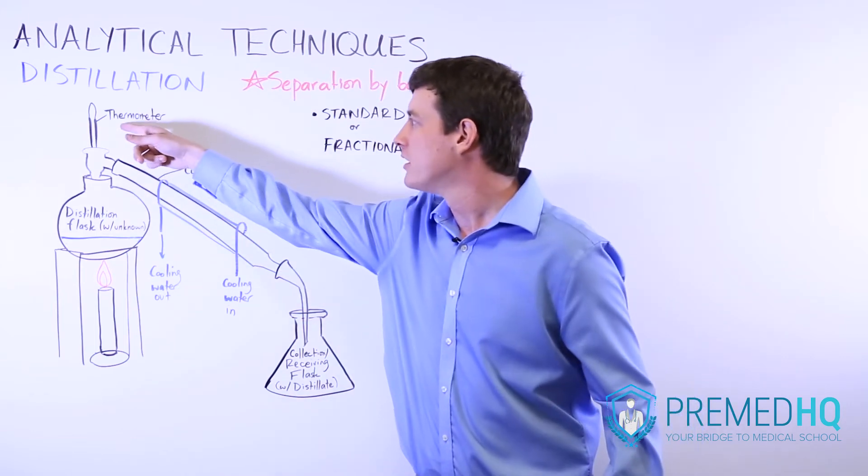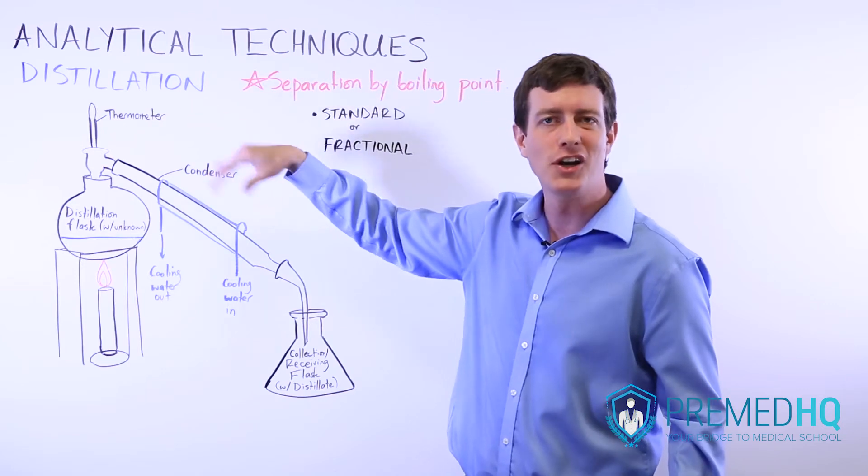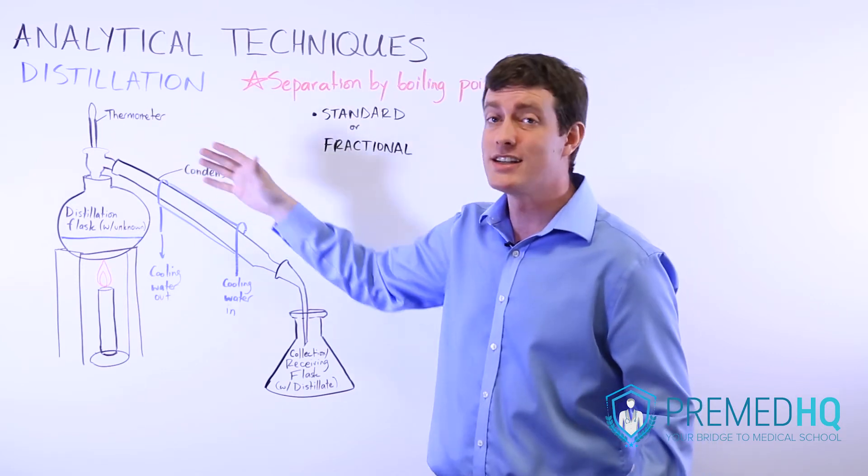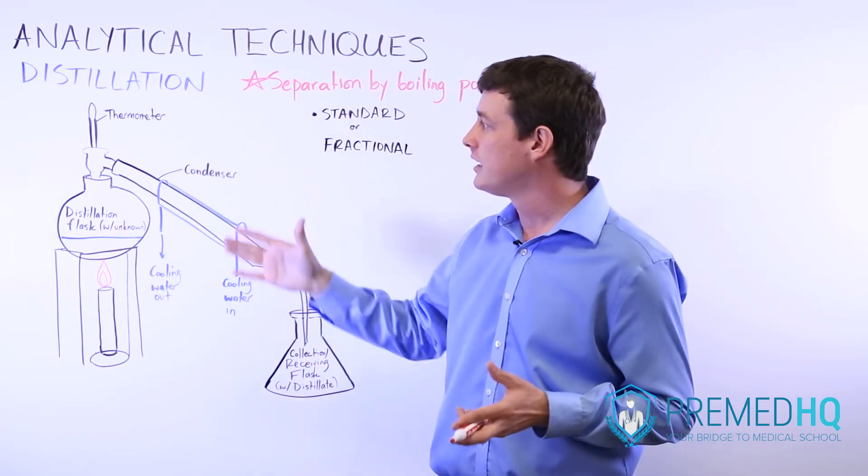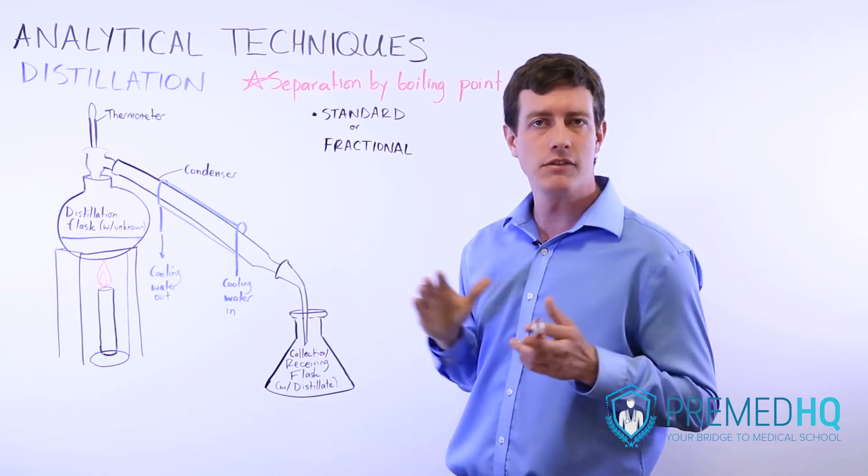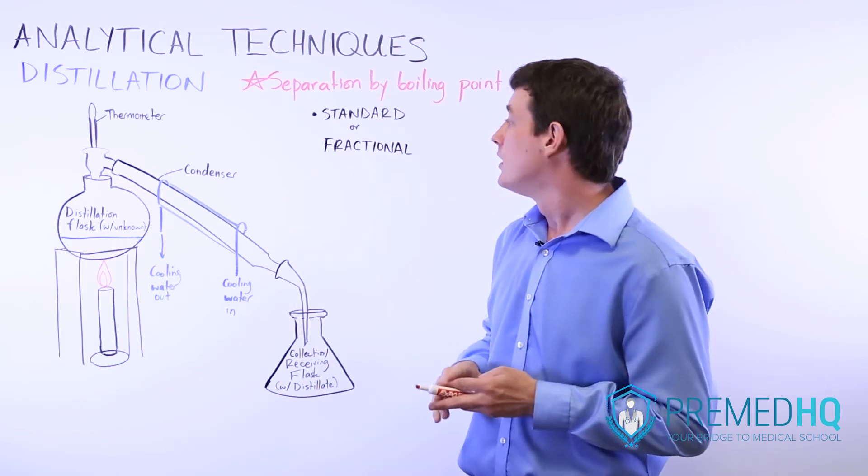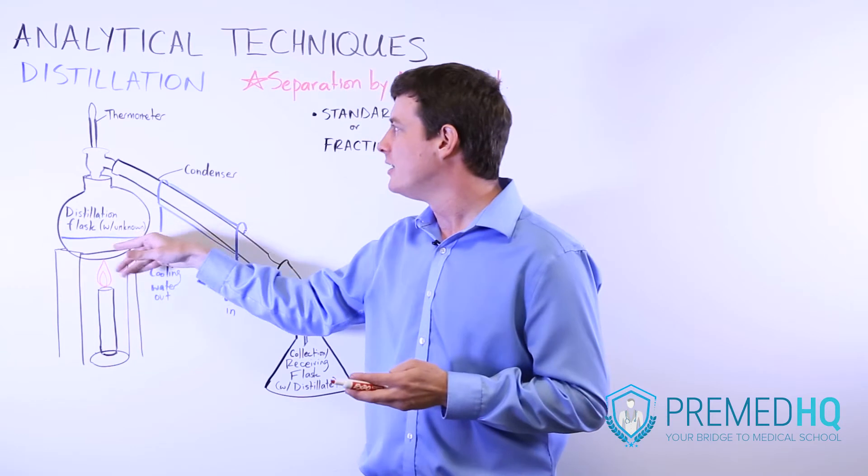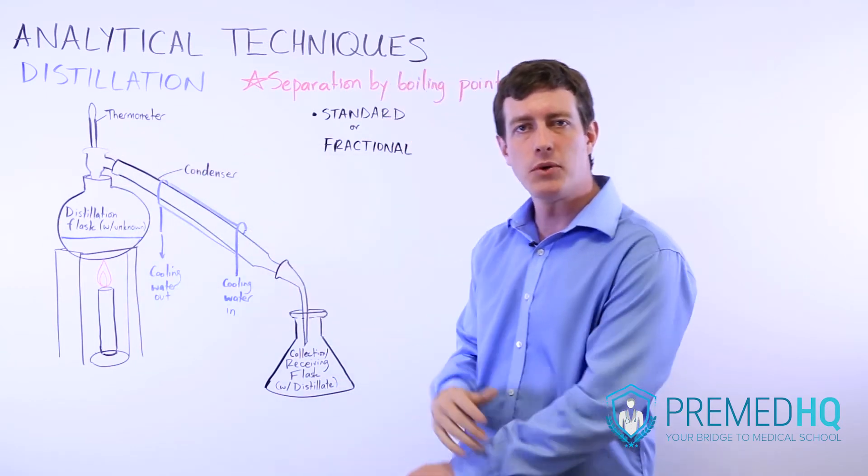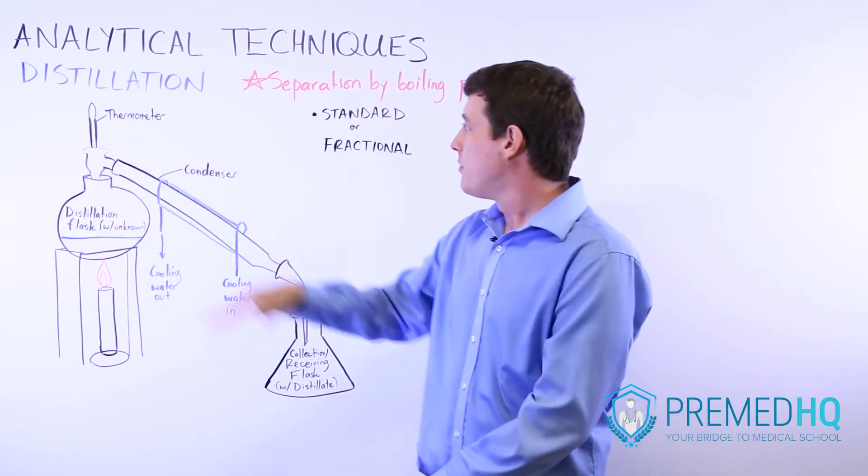You might have a thermometer to keep track of the temperature at which these things occur, because that thermometer can give you clues as to the boiling point of your unknown compounds. Or perhaps it might just be one unknown that you're looking at the boiling point of. But the thermometer can be helpful.